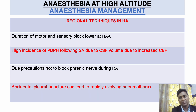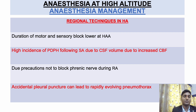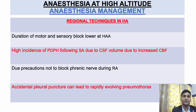When possible, use regional anesthesia — it is safer at high altitude as it preserves ventilatory response. Duration of motor and sensory block is lower at high altitude. Incidence of PDPH increases due to increased cerebral blood flow. When doing upper limb blocks, take precautions not to block the phrenic nerve. If doing central vein cannulation, accidental pulmonary puncture can lead to rapidly evolving pneumothorax at higher altitudes.